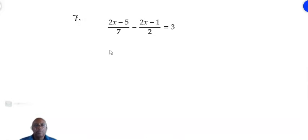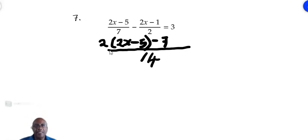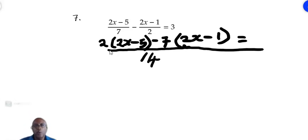For number 7 we have 2x minus 5 over 7, minus 2x minus 1 over 2, equals 3. As we did for number 6, we find the LCM of the denominators — LCM of 7 and 2 is 14. So we bring everything to a denominator of 14. For the first fraction, 7 into 14 is 2, so we multiply 2 times 2x minus 5. For the second fraction, 2 into 14 is 7, so we multiply 7 times 2x minus 1. On the right, 3 times 14 is 42 over 14. Since 14 is on both sides we leave it out and expand the brackets.